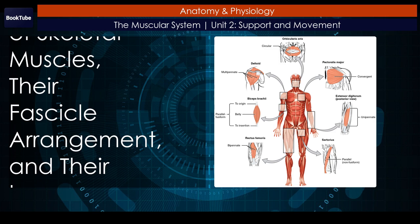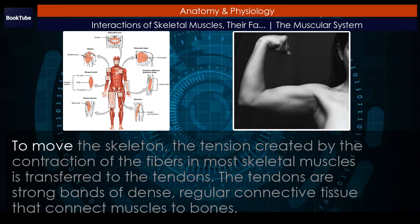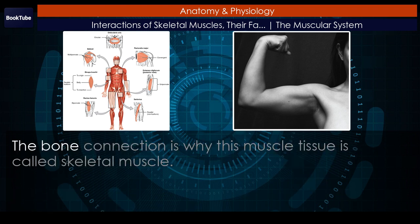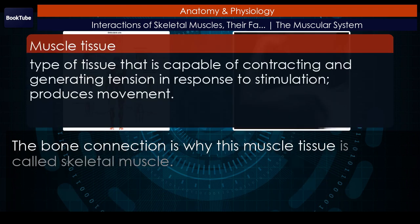This section covers interactions of skeletal muscles, their fascicle arrangement, and their lever systems to move the skeleton. The tension created by the contraction of the fibers in most skeletal muscles is transferred to the tendons. The tendons are strong bands of dense, regular connective tissue that connect muscles to bones. The bone connection is why this muscle tissue is called skeletal muscle.